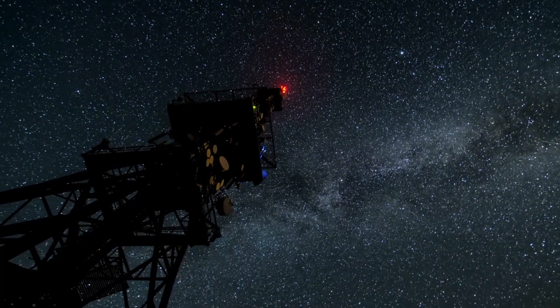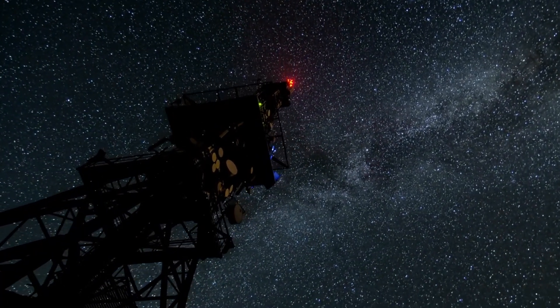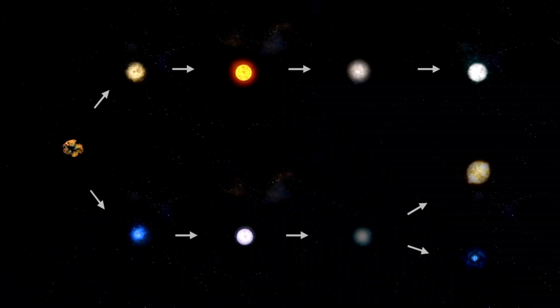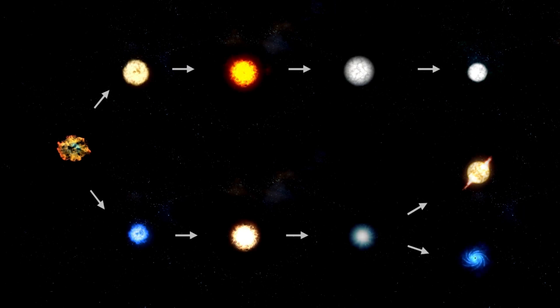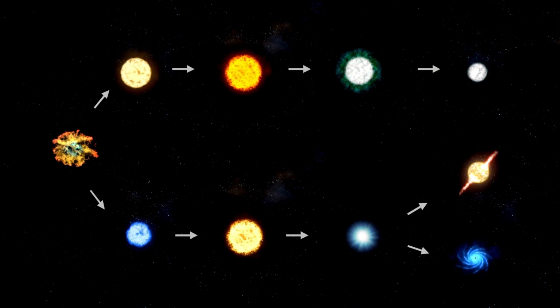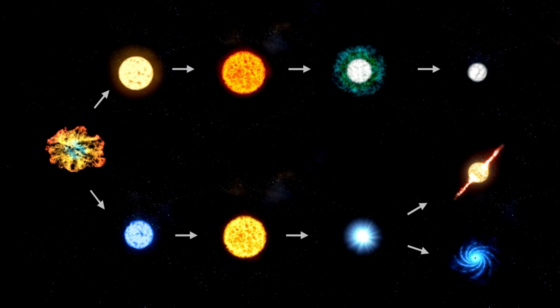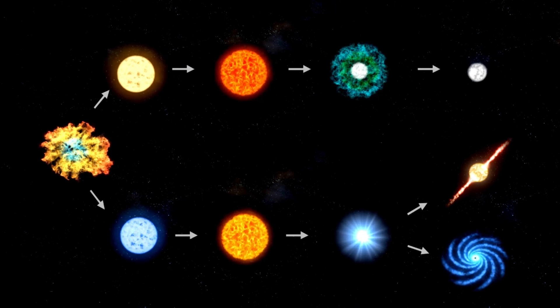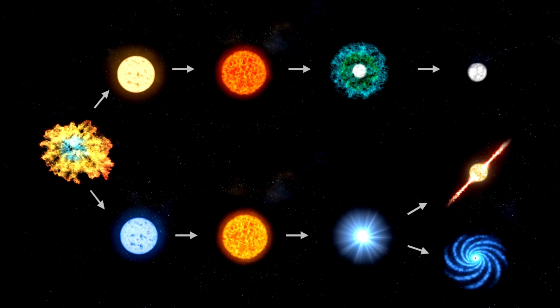Currently, supernovae are often observed in distant galaxies, making it difficult for astronomers to gather detailed data about their progression. Betelgeuse's proximity to Earth at around 640 light-years would provide scientists with an unprecedented vantage point to observe the complete life cycle of a supernova event, from the initial collapse to the eventual formation of a neutron star or black hole.